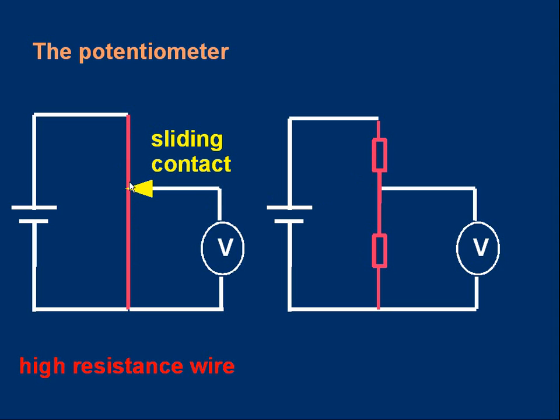The right-hand diagram doesn't show the fact that the circuit is adjustable, but it shows the wire corresponds to two resistors. If the sliding contact was raised up to the top,